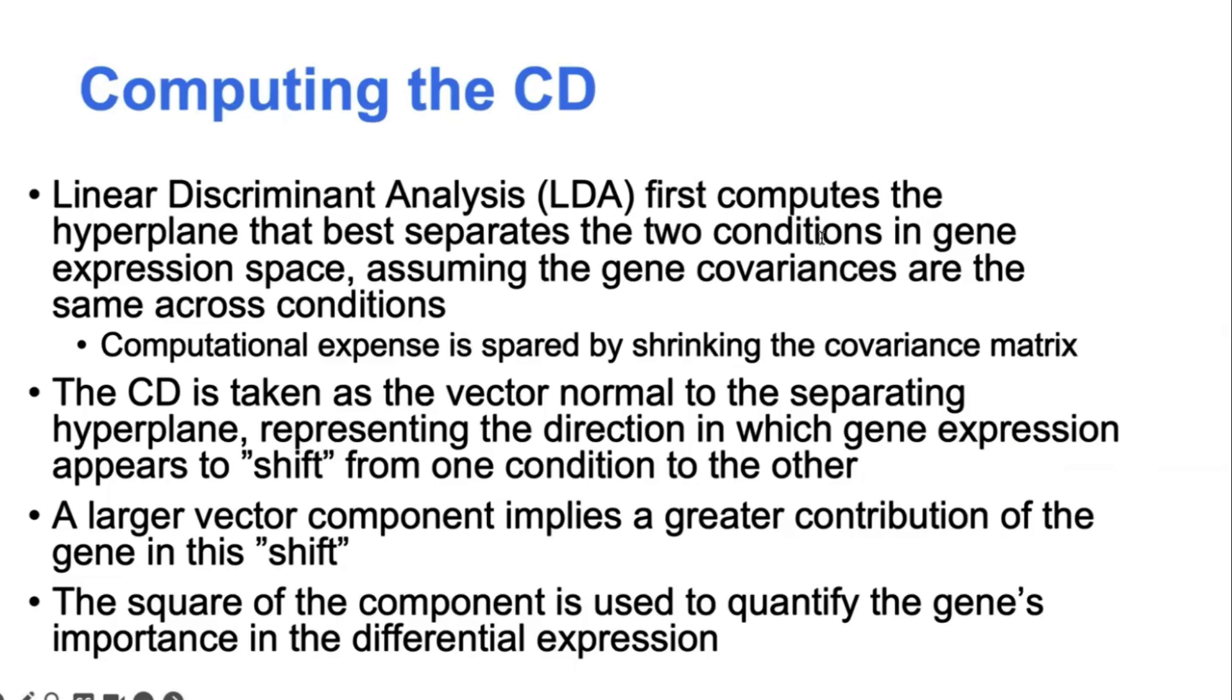But basically there are some mathematical shortcuts that we can use to decompose and then invert that covariance matrix, such that in the end, what would otherwise be a very costly computation in a high dimensional space with thousands of genes, actually becomes something that you can compute relatively efficiently. So yeah, the LDA analysis is what we use to calculate that single vector from the count matrix.